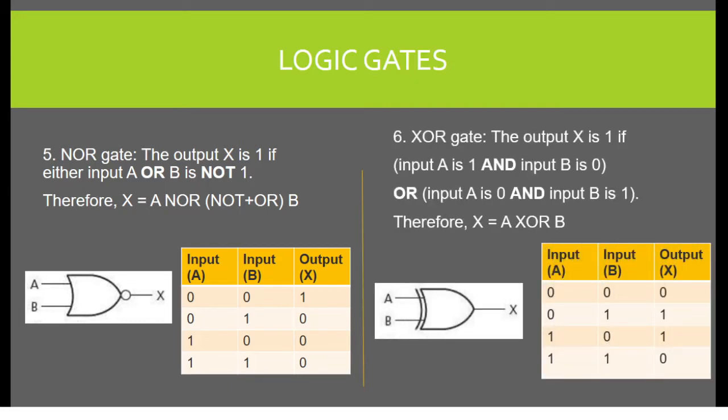XOR gate. The output X is 1 if input A is 1 and input B is 0, or input A is 0 and input B is 1. Therefore, X equals A XOR B. So when the inputs are either 1-0 or 0-1, the output will be 1.